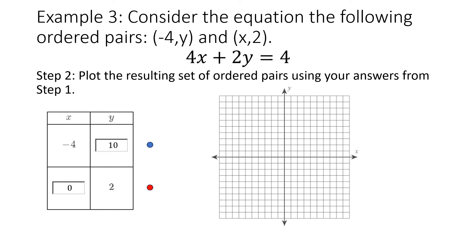Step 2: we're actually going to plot the resulting set of ordered pairs using the answers from Step 1. Our first coordinate is negative 4 comma 10 — I'll put a blue dot at negative 4 on the x-axis and up to 10 on the y-axis. For the second point, 0 comma 2, I'm going to put a red dot — it's at 0 on the x-axis and goes up to 2 on the y-axis. That's where it's located on the coordinate plane.